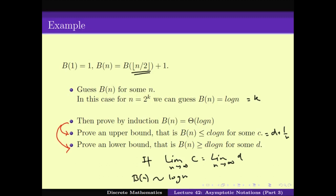When proving these inductions, don't use asymptotic notations directly. Asymptotic notations are just a nice language that helps us describe how the function behaves in the long run; they don't say anything about the exact value of B(N) or any such precise details.